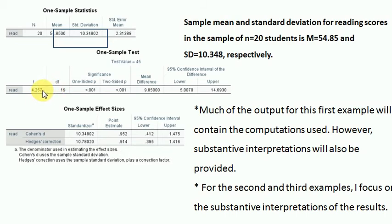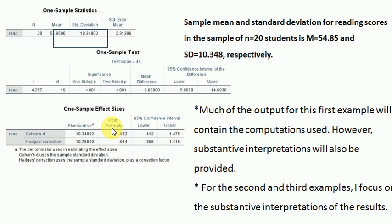If you have an alternative hypothesis, it is not significant. But if you have an alternative hypothesis at 0.001, it is not significant. If you have an alternative hypothesis, it is not significant. The score of students is different from 45. If you have an alternative hypothesis, you have to be an alternative hypothesis.